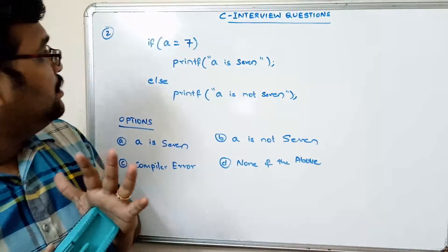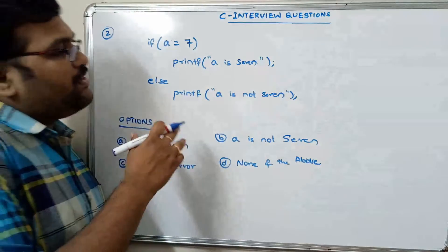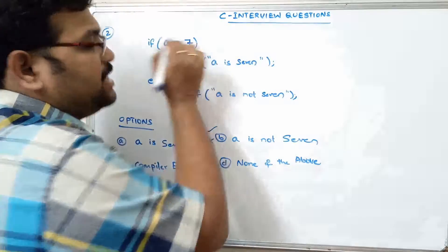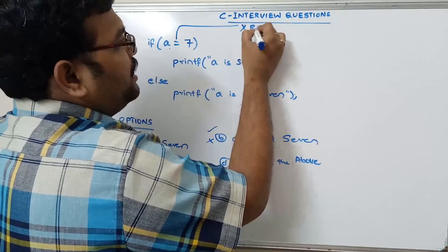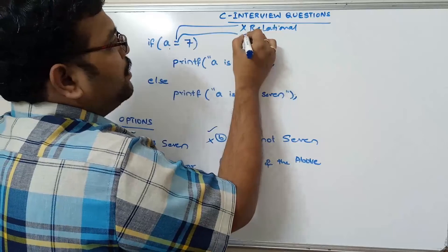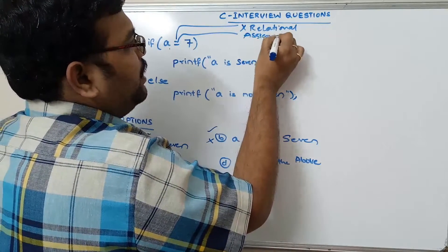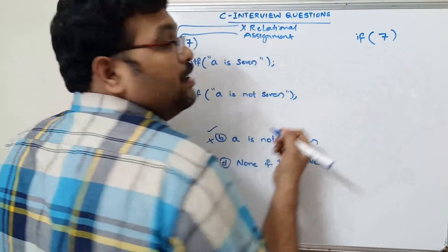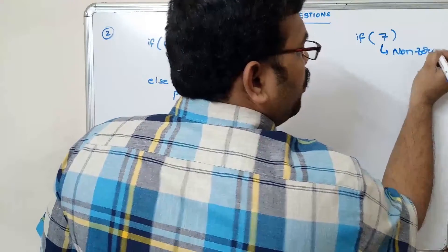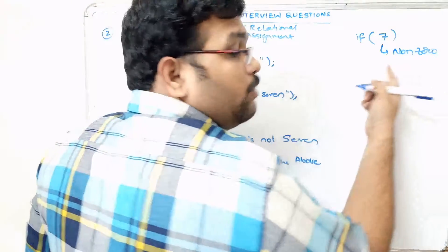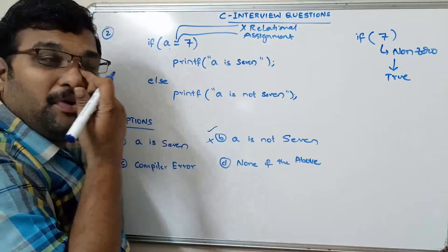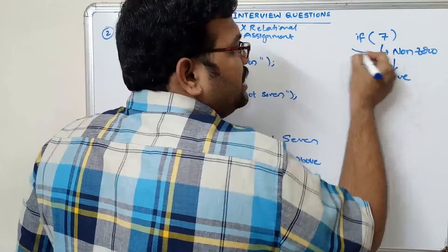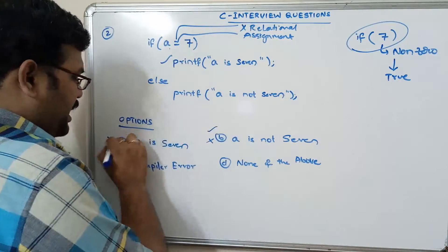The third question is similar to the second one. Here, if(a=7) print 'a is 7', else print 'a is not 7'. Again, this is not a relational operator — it is an assignment operator. So 7 is assigned to a, and the condition becomes if(7). Since 7 is a non-zero value, and every non-zero value in C is considered true, the if block will be executed and 'a is 7' will be printed.